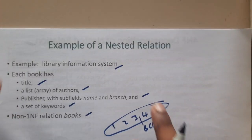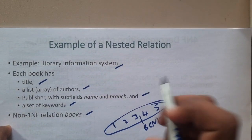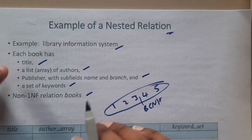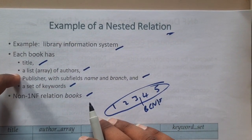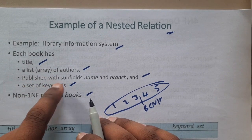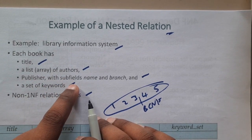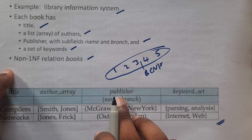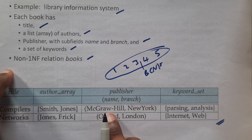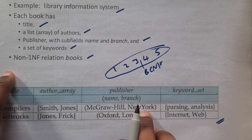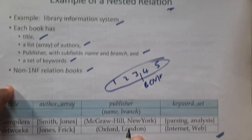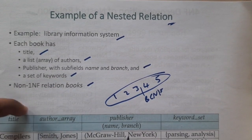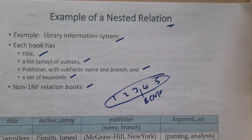Here is a small example of a nested relation. The table has multiple values: a single title, a list or array of authors, publishers with subfields name and branch (publisher name and location), and a set of keywords. If you observe, publisher has name and branch combined. This is a non-atomic relation — it is not in 1NF.